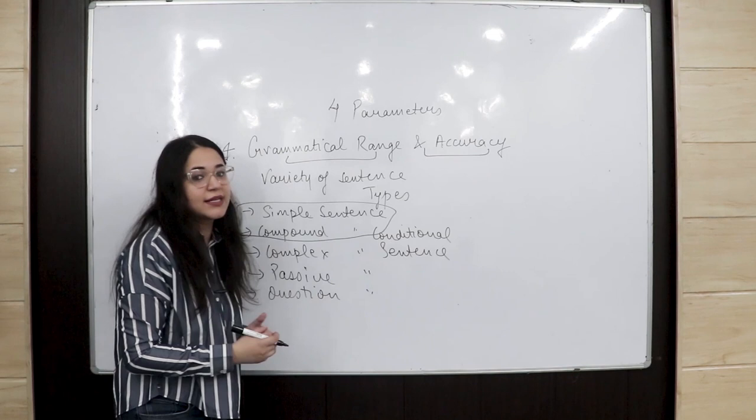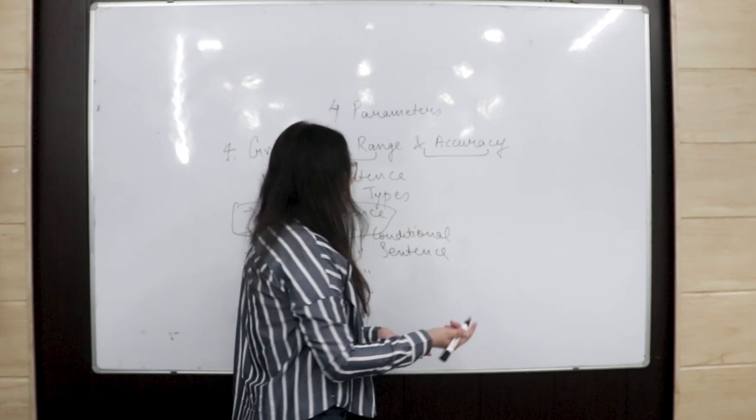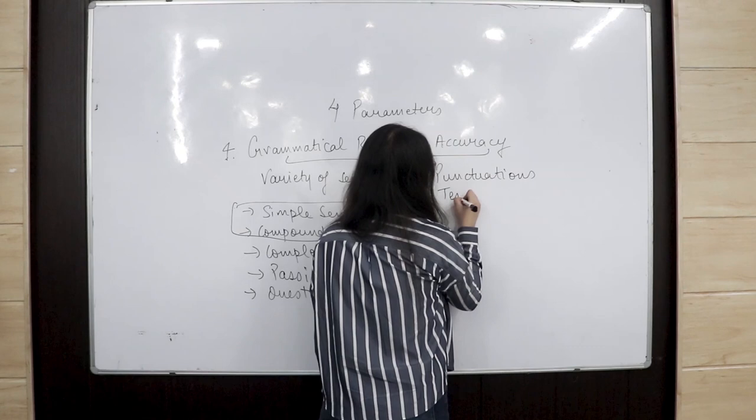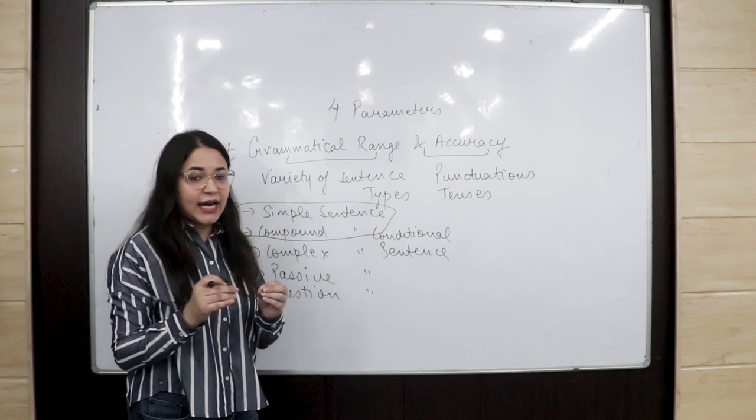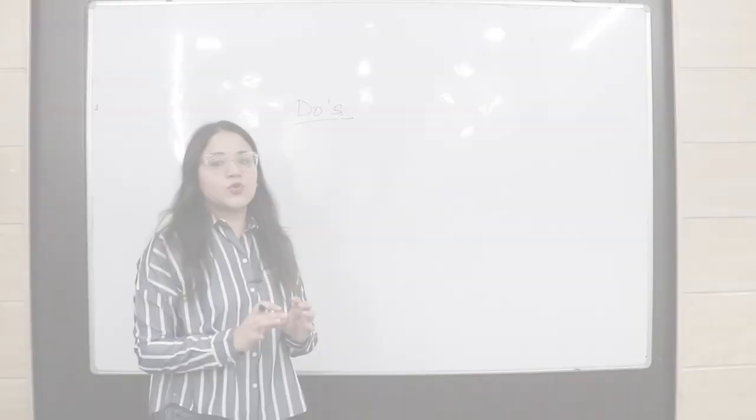Grammatical range is your variety of sentence types, whereas grammatical accuracy is your basic grammar — punctuation, tenses, prepositions, and articles. Most students can score well in grammatical accuracy, but the problem comes in grammatical range. This is why your overall band score gets reduced.